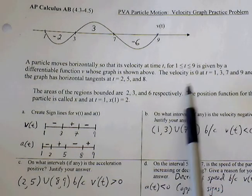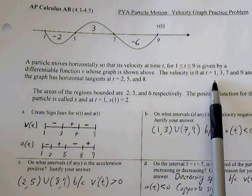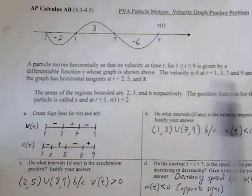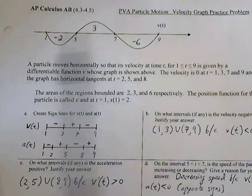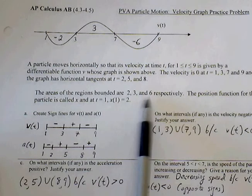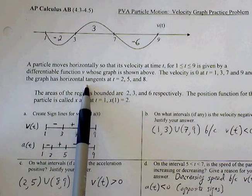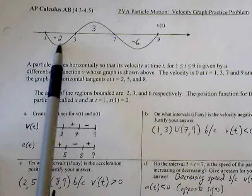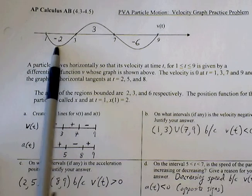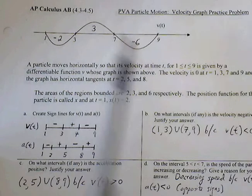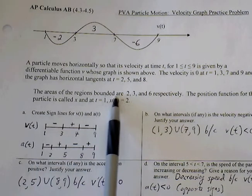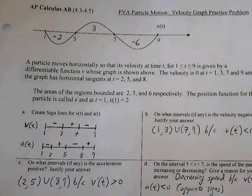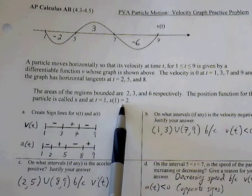The velocity is 0 at t equals 1, 3, 7, and 9. We're looking at velocity graphs, so when I cross the x-axis, that's where velocity is 0. Horizontal tangents are at 2, 5, and 8, where slope is 0 at these points. The areas of the regions bounded are 2, 3, and 6. The position function is called x, and at t equals 1, x of 1 equals 2. That's our starting point.